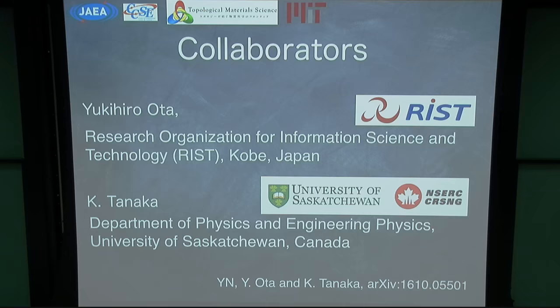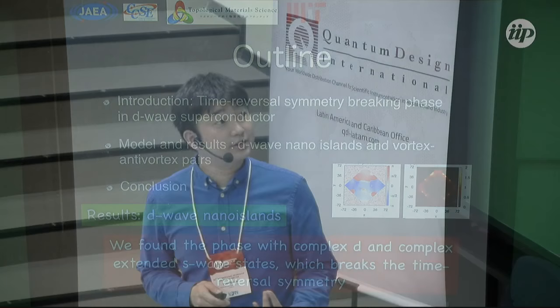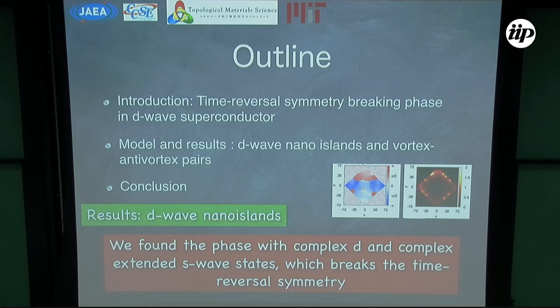This is the outline. First, I'd like to introduce the history of the time reversal symmetry breaking phase in d-wave superconductors, because I think 20 years ago there were many papers. Then I would like to show the model and results. We use the Bogoliubov-de Gennes equations to obtain the ground state of the d-wave nano island. The result is that we found the time reversal symmetry breaking phase in the low temperature region in the nano island, and we also found vortex-antivortex pairs appearing in the low temperature region.